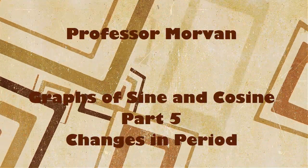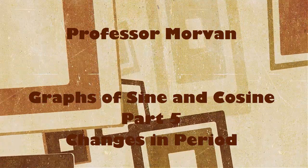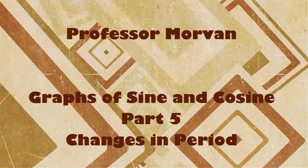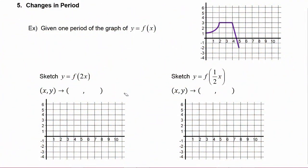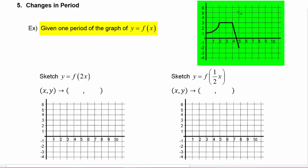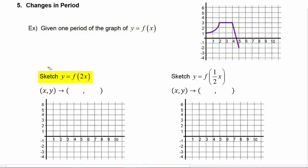In part five of our lesson on graphs of sine and cosine, we're going to study how changes in period affect the graphs. In this example, we're given one period of the graph of y equals f of x, and we're being asked to sketch y equals f of 2x. From your college algebra class, you may remember that the point (x, y) on the graph of f of x will turn into the point (x/2, y) on the graph of f of 2x — you divide by whatever the coefficient of the argument is.